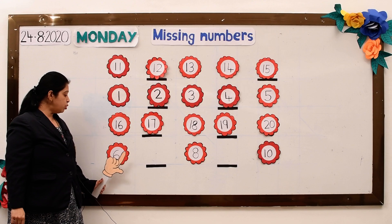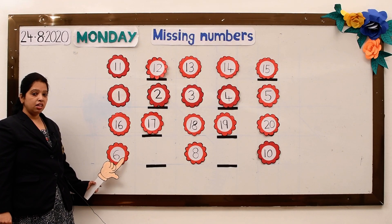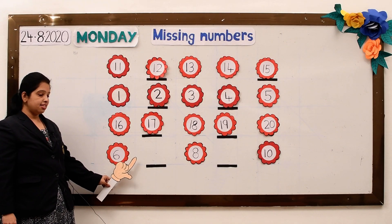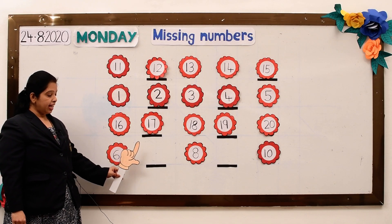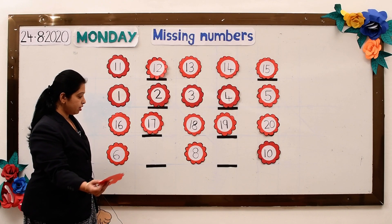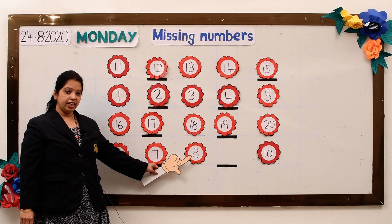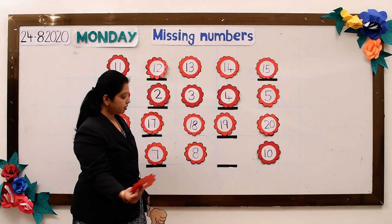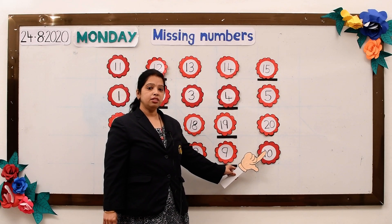Now let us move towards the fourth line. Now, children, here you have got the idea of missing numbers. So can you tell me which number is missing here? Yes, number 7. This is number 6, after that number 7 is missing. Number 8. Again, here number 9 is missing. Here comes the number 10.